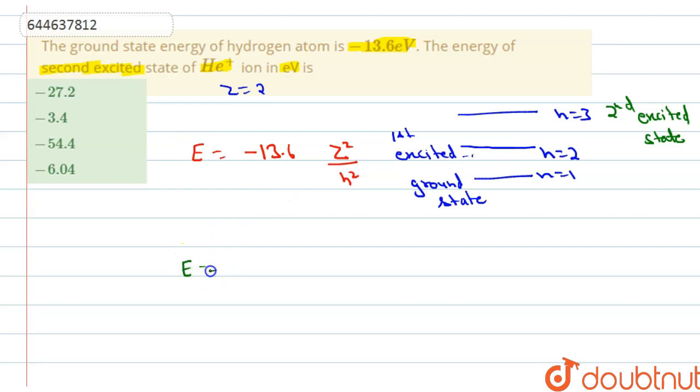So E equals minus 13.6 times z squared. This will be 2 squared, this will be 4, divided by n squared. Here n equals 3, this is divided by 9.